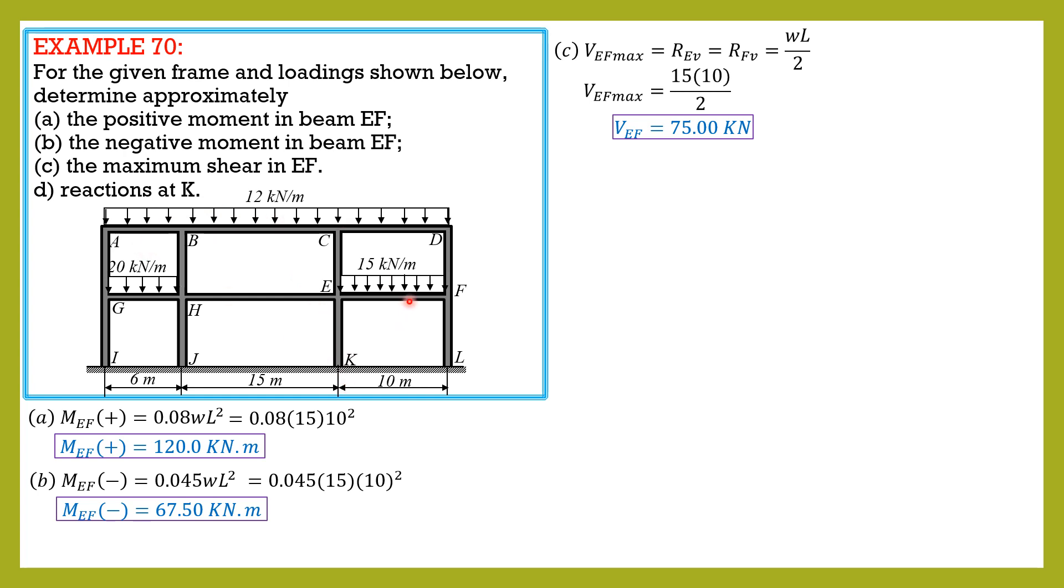Then the reactions at K: since these are all gravity loads, there is no lateral load, so naturally the horizontal reaction component at K would be 0. Let's draw the free body diagram.